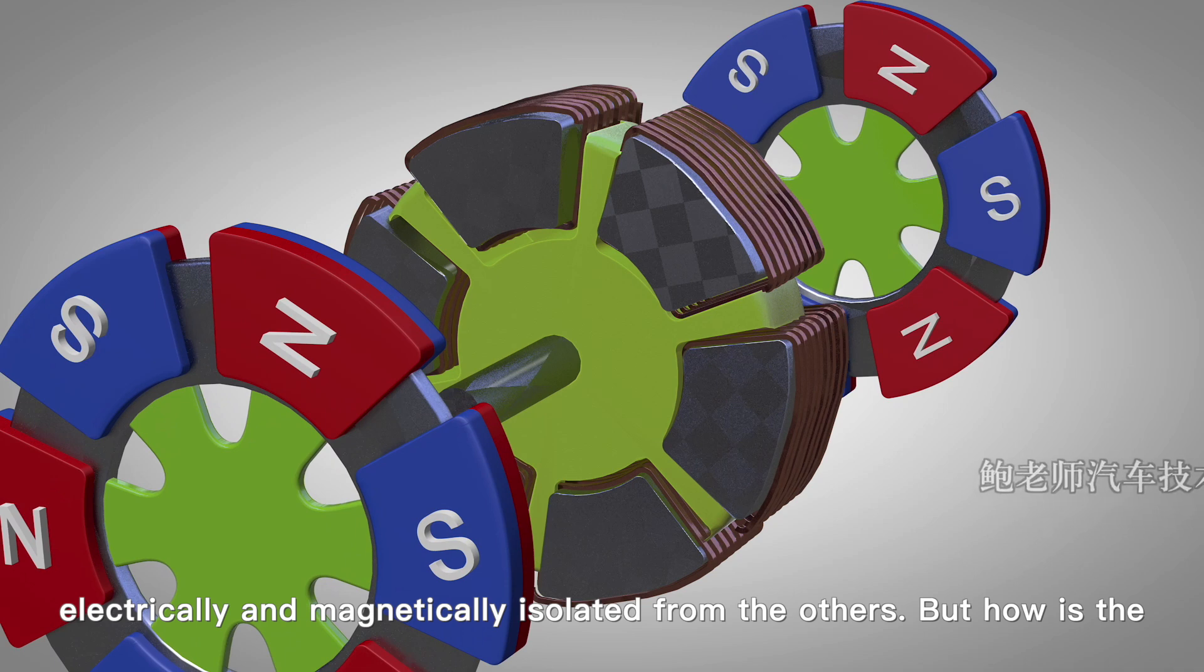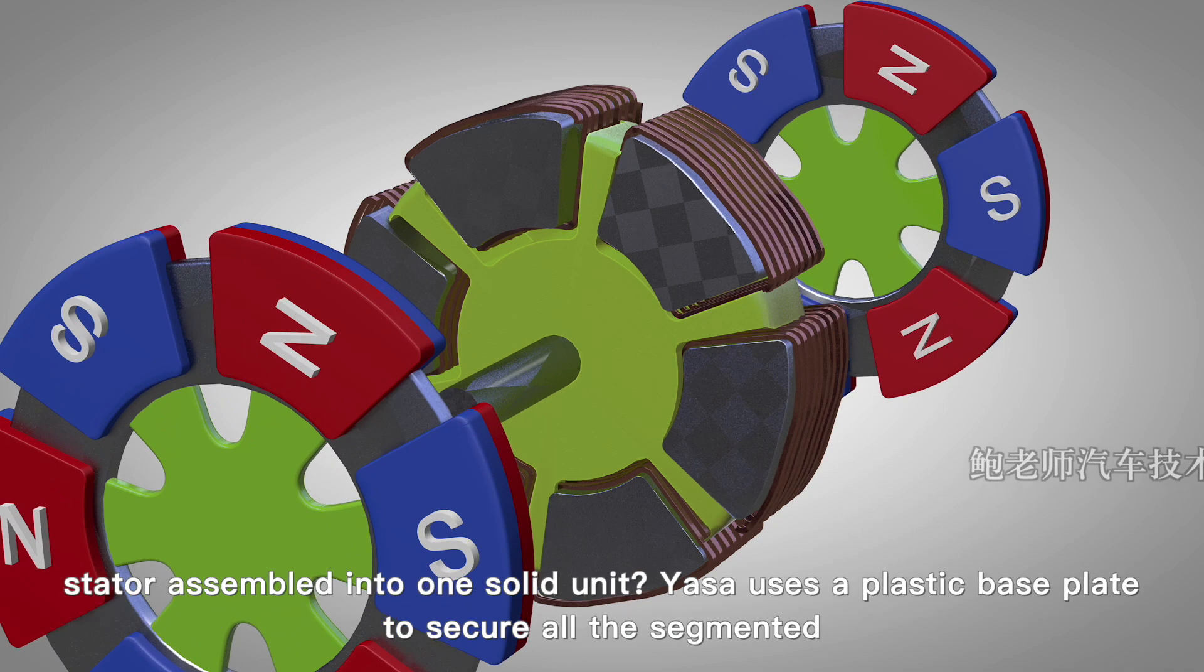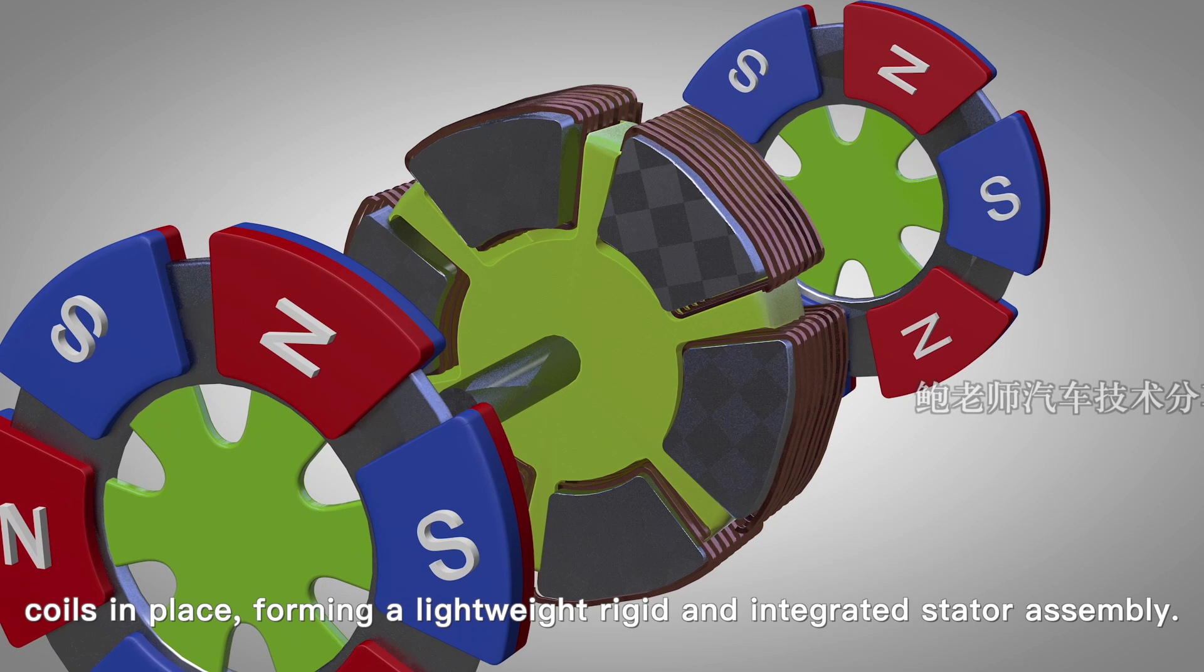But how is the stator assembled into one solid unit? YASA uses a plastic base plate to secure all the segmented coils in place, forming a lightweight, rigid, and integrated stator assembly.